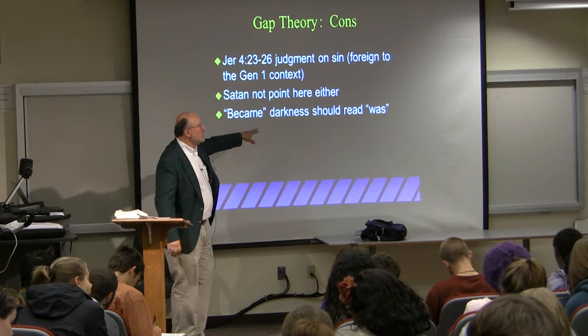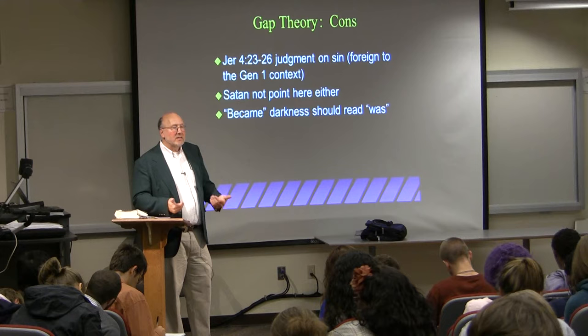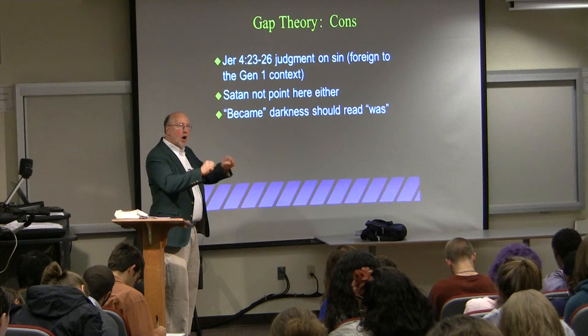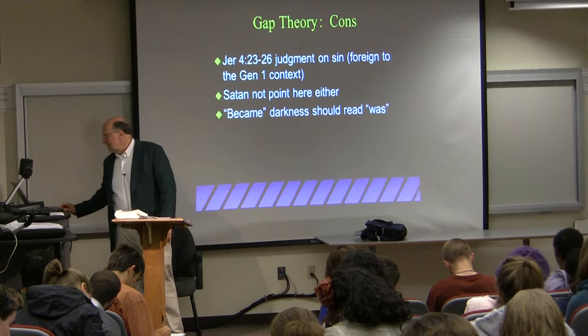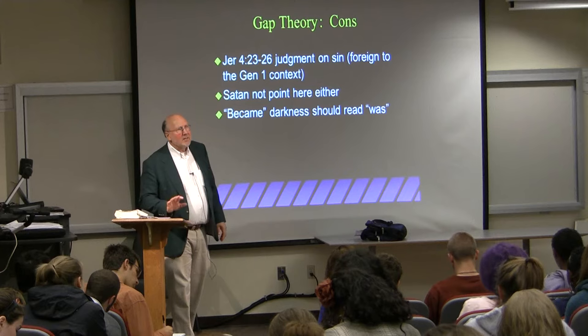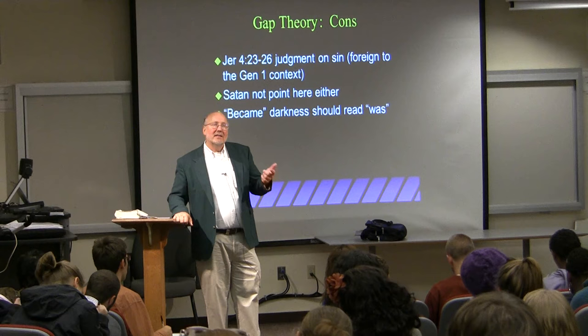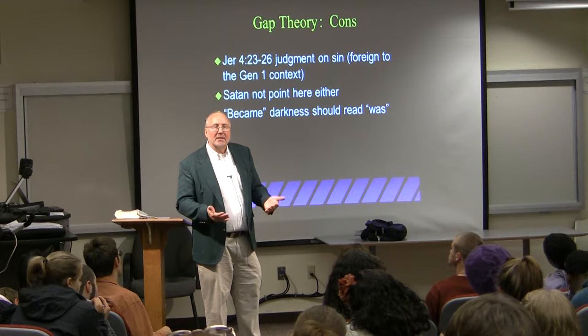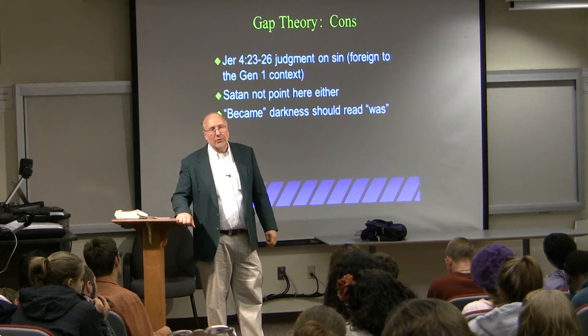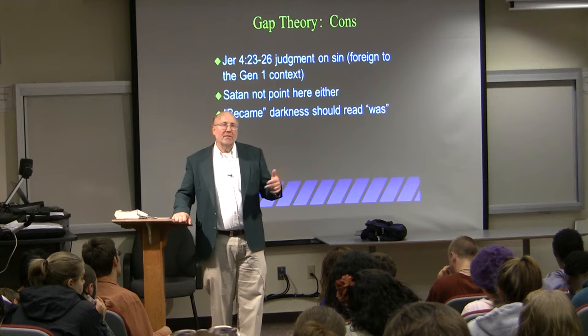The word should be read as all your modern translations have it: 'the earth was formless and empty,' not 'became.' In the beginning God created the heavens and the earth, and the earth was formless and empty. Does the Gap Theory allow for an old earth? Is it possible that Satan was messing around for a couple of billion years? Yes — so the Gap Theory does allow for an old earth and gives a place to the dinosaurs. This theory came up in the 1950s and 1960s, put out by the Schofield Bible.